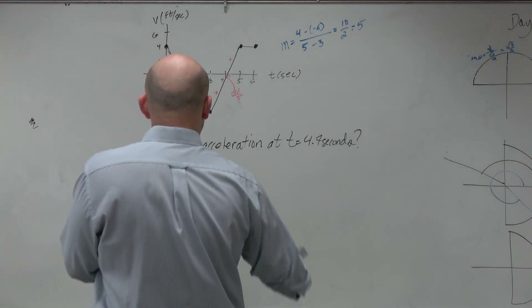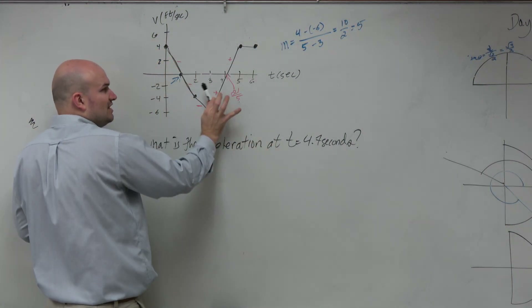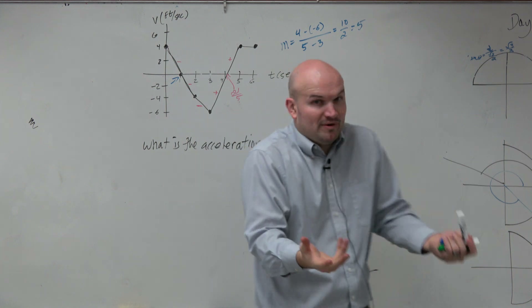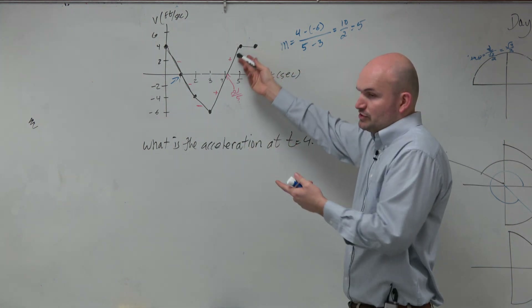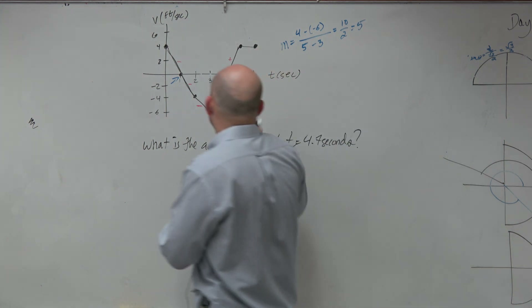The acceleration, given the velocity graph, is the slope of the velocity. So we just need to find the slope at 4.7.